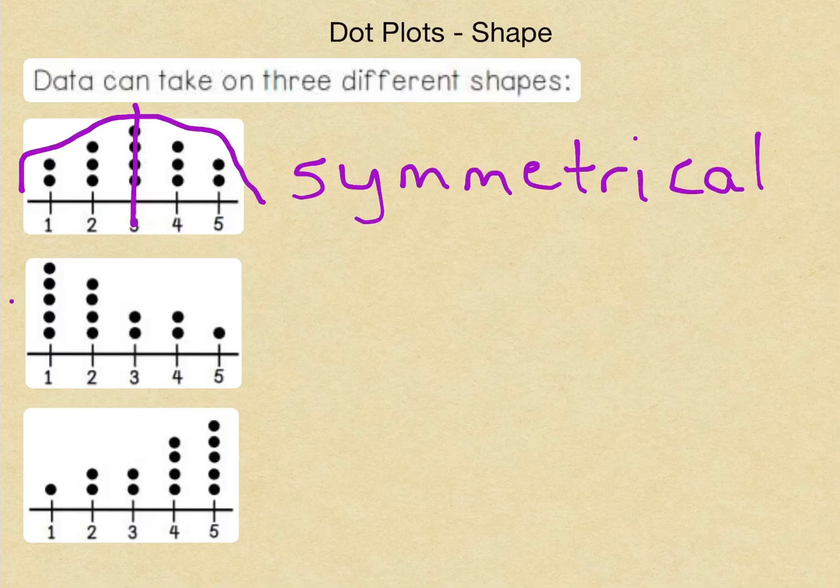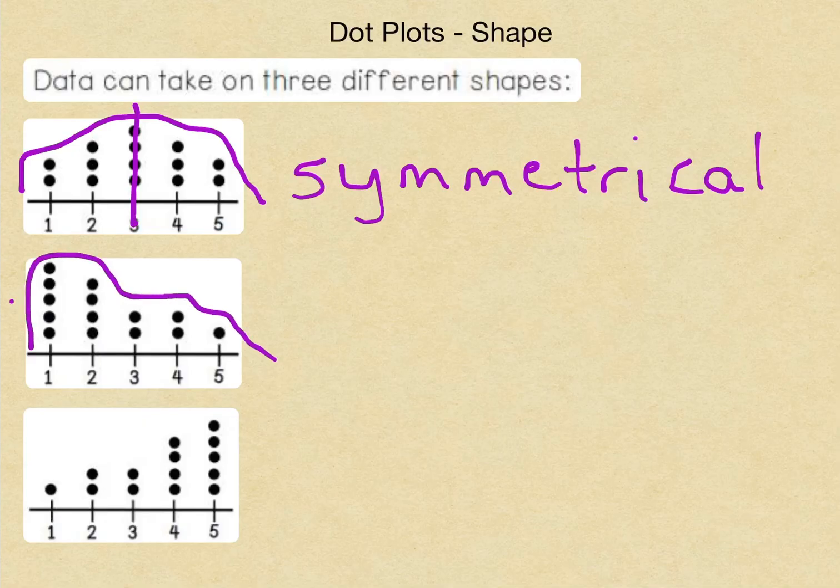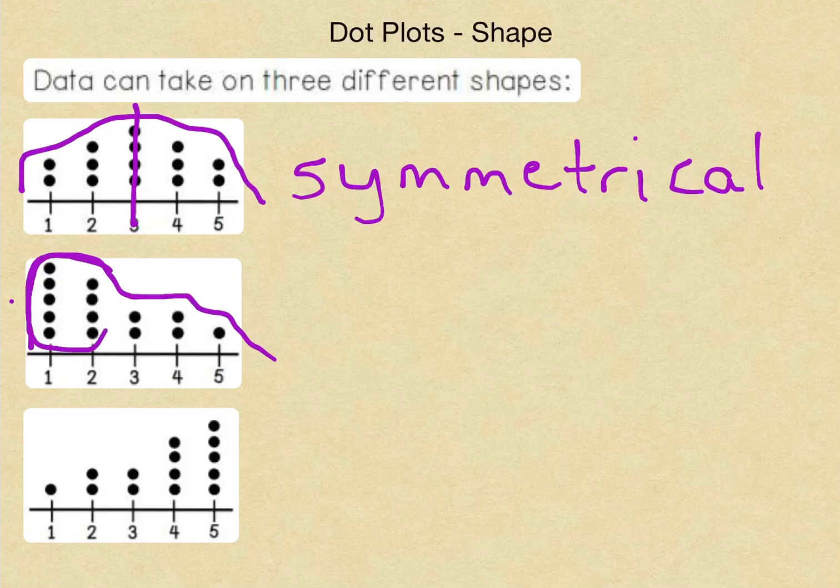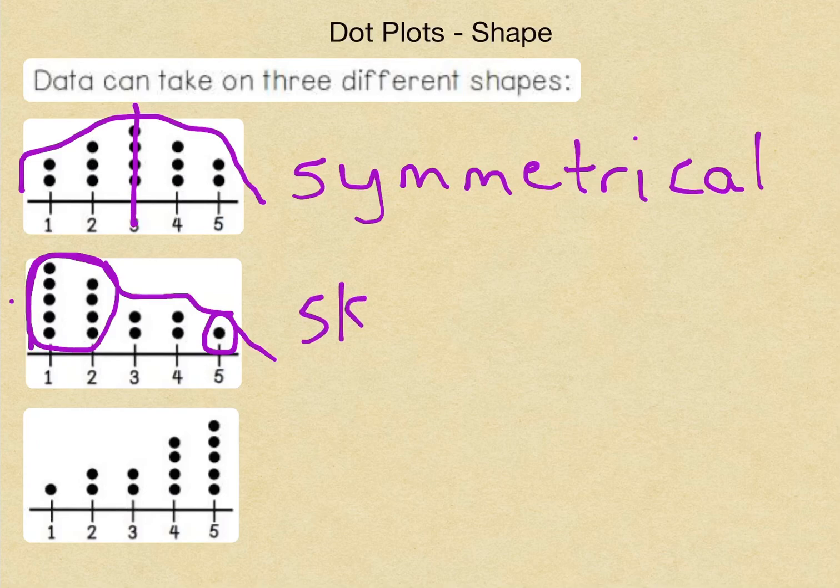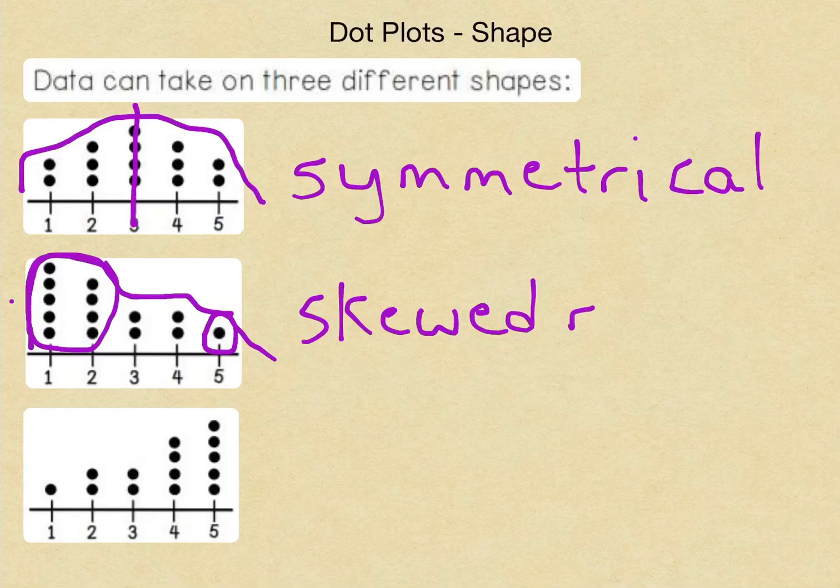Now, for our second type of data shape, this one looks a little different. Whenever we trace around it, we can see that it's not the same on both sides. Actually, most of the points are located on the left side over here. And then on the right side, we have one point. And so because the majority of the points are towards the left, that means that this data is skewed right.